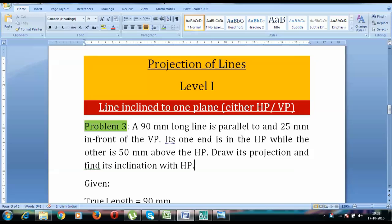It goes like this. A 90mm long line is parallel to and 25mm in front of the VP. Its one end is in the HP while the other is 50mm above the HP. Draw its projections and find its inclination with the HP.